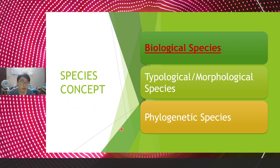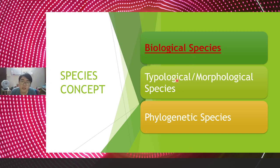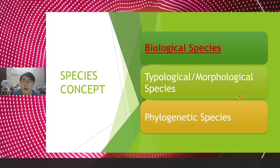In taxonomy, we classify all living organisms into taxa. The concept of species has caused much confusion and difficulty for scientists trying to define it. There are three major species concepts: biological species, typological or morphological species, and phylogenetic species. In taxonomy, we focus more on the biological species concept — not that the other two are wrong, but they are less suitable for taxonomy.